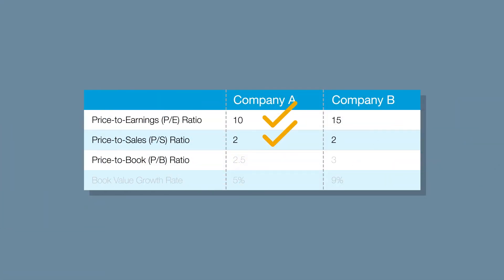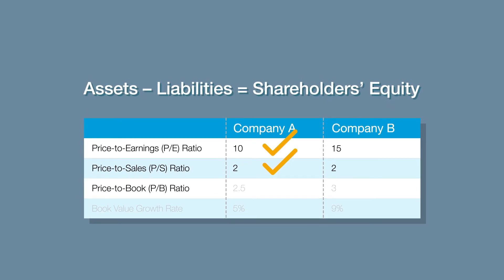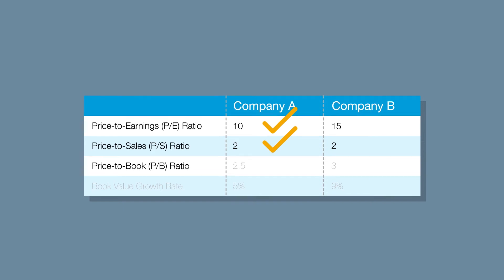Let's move on to the price-to-book ratio. Recall that the book value of a company is the shareholder's equity, or basically the assets minus the liabilities. Company A's share price is a multiple of 2.5 times, while Company B is 3 times. Value investors typically prefer a lower price-to-book ratio because it indicates they're paying less for equity in the business, so Company A appears to be a better value.